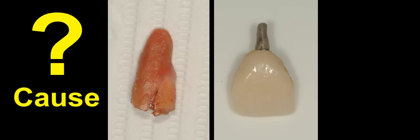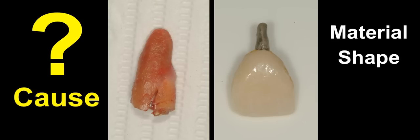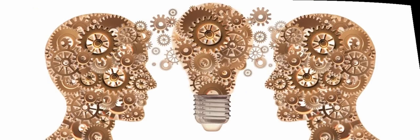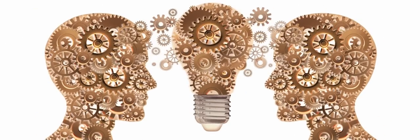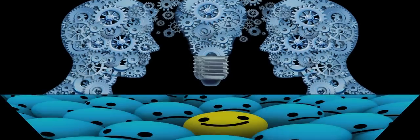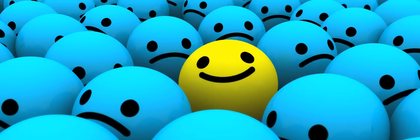What caused it — was it the material, the shape and size, or the cementation technique used for this post and core? I cannot comment and we can never be sure. But to my mind, we need more flexible materials for the post and core restoration. This is a subject for another short presentation. I hope I was able to give you some new point of view on some old ideas. Thank you very much for your attention.